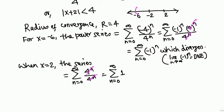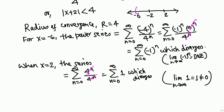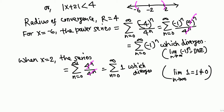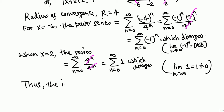The 4^n on top and bottom cancel, leaving just 1. So we have the sum from n equals 0 to infinity of 1, which is 1 plus 1 plus 1 infinitely many times — the sum is infinity, so this diverges. The limit of 1 as n goes to infinity is 1, not 0, so by the test for divergence it diverges. Therefore x equals 2 is not included, and the interval of convergence is (negative 6, 2) — endpoints not included.